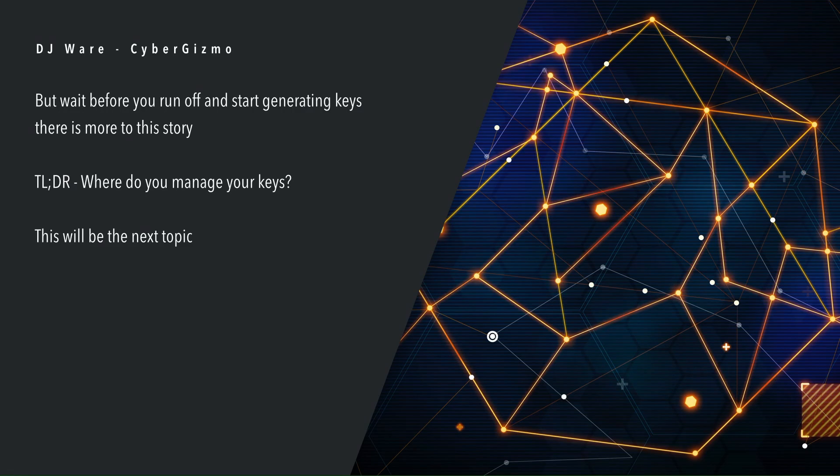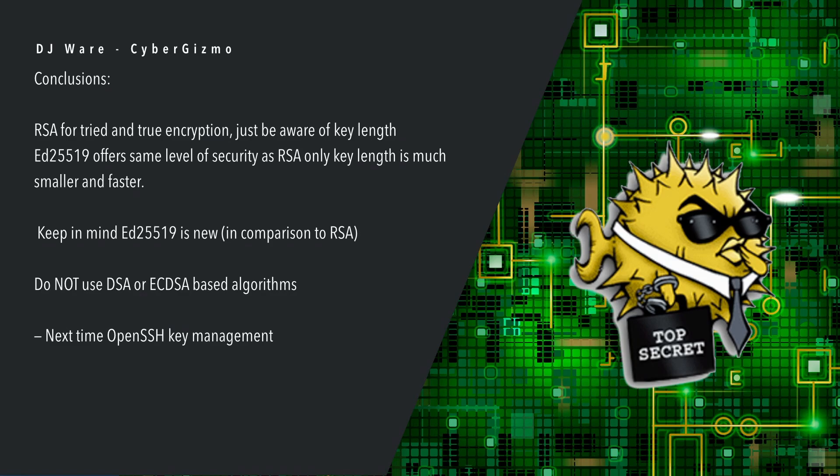Before you run off and start generating keys, there's a lot more to this story. Believe it or not, the key algorithms and key lengths aren't the big problem with OpenSSH. Where OpenSSH gets broken is through inappropriate configuration — misconfiguration. The real question is: where do you manage your keys? Obviously RSA has tried and true encryption — just be aware of the key length you're using and stay current enough to know that the security key you're using is still safe to use.